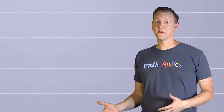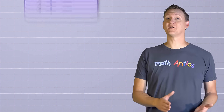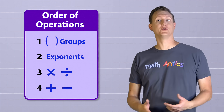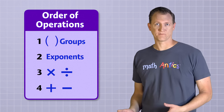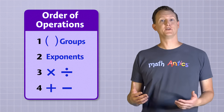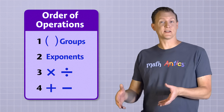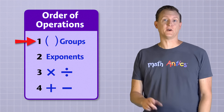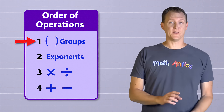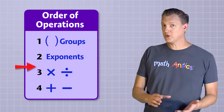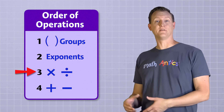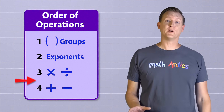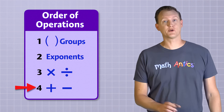Fortunately, in math, we have a special set of rules that tell us what order to do operations in. Those rules tell us to do operations inside parentheses first, and then we do exponents, and then we do multiplication and division, and last of all, we do addition and subtraction.